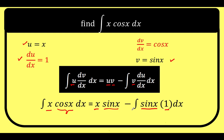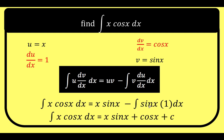Finally, we compute the right side. The antiderivative of sine x is negative cosine x, and negative cosine x times the negative sign gives positive cosine x. So the antiderivative of x cosine x dx equals x sine x plus cosine x plus the constant of integration C. This is our final answer, arrived at using the technique called integration by parts.